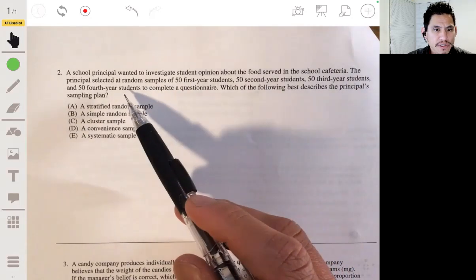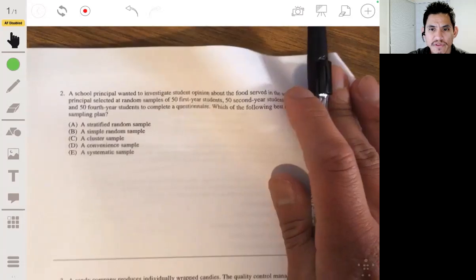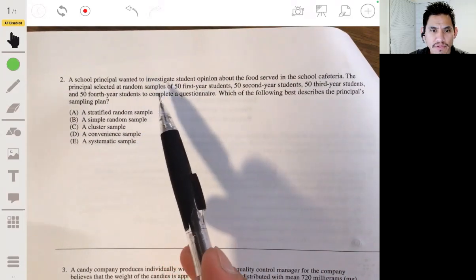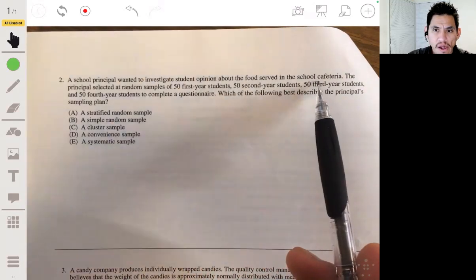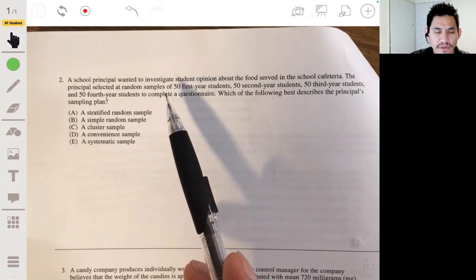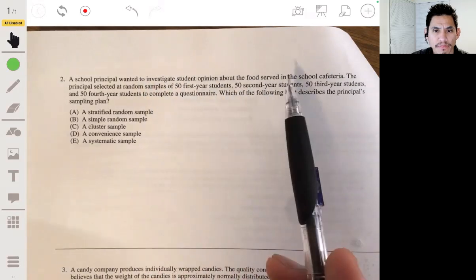All right, problem two. A school principal wants to investigate student opinion about the food served in the school cafeteria. The principal selected at random samples of 50 first year students, 50 second year students, 50 third year students, and 50 fourth year students to complete a questionnaire. Which of the following best describes the principal's sampling plan?